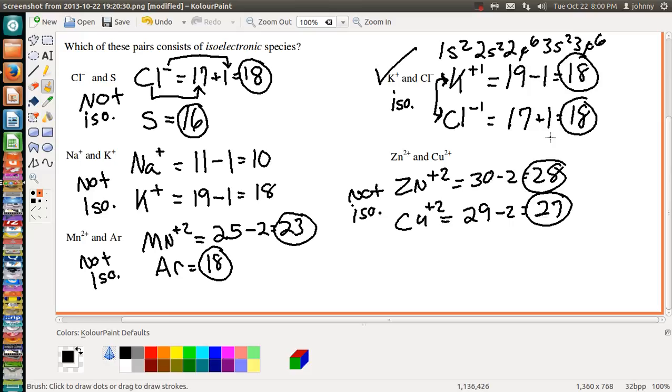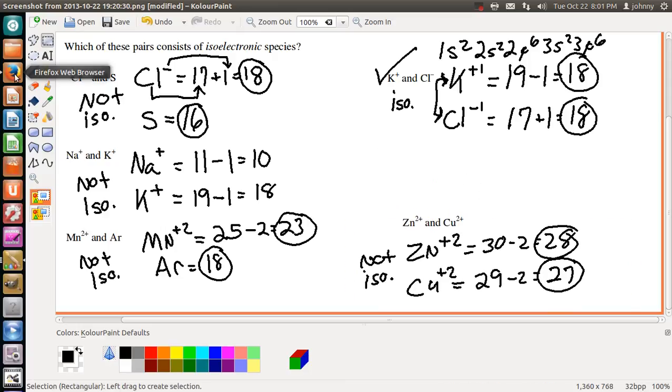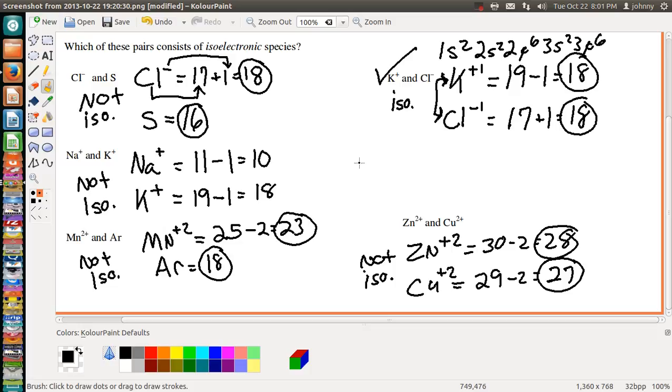Now here's my question for you to see if you can figure this out. Between these two species, between the K⁺ and the Cl⁻, if we were talking about ionic radius, which one would have the largest ionic size? Which one will be larger?